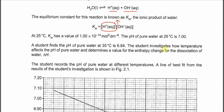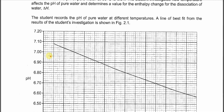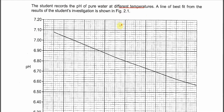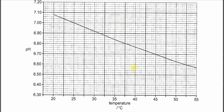The student investigates how temperature affects the pH of pure water and determines the value of ΔH of dissociation of water. The student records the pH of pure water at different temperatures and the line of best fit from the results is shown in Figure 2. From here we know that when temperature increases, pH decreases. This causes the water to ionize more and form more H⁺, but the water is still neutral.